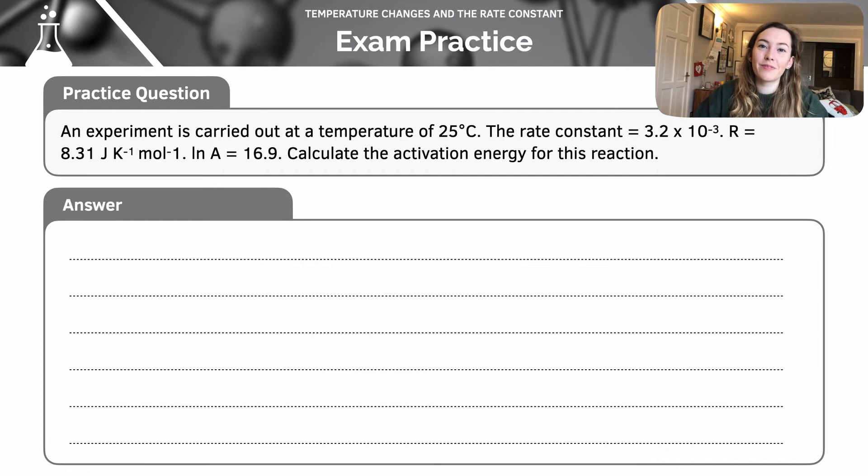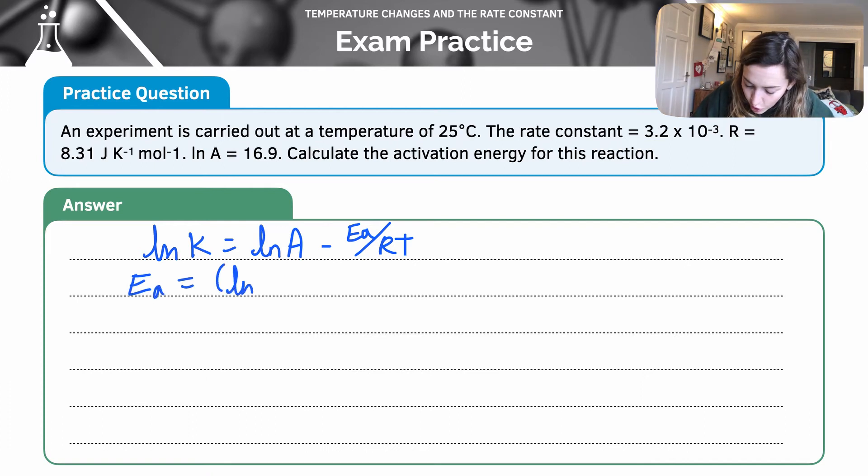Pause the video and have a go. I'm going to skip forward here and immediately write out my natural log version of the equation. So remember, ln k is equal to ln A, or the natural log, I would say ln, minus Ea over RT. So we've been asked to calculate the activation energy of this reaction. So you recall when I rearranged it, Ea was equal to ln A minus ln k times RT.